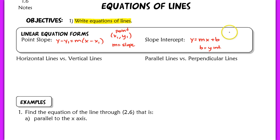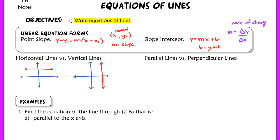If we define slope, slope is just a rate of change. Typically that rate of change is the change in y over the change in x. Whenever we have a horizontal line, our equation will always be in the form y equals a number. And if we have a vertical line, that equation is x equals some number.